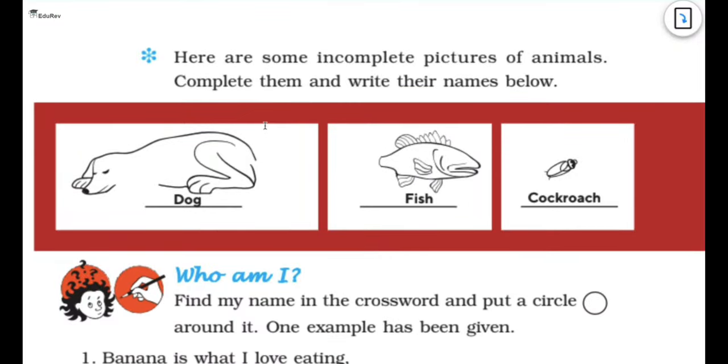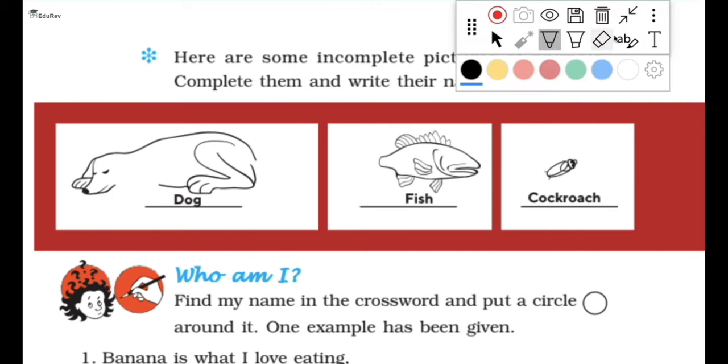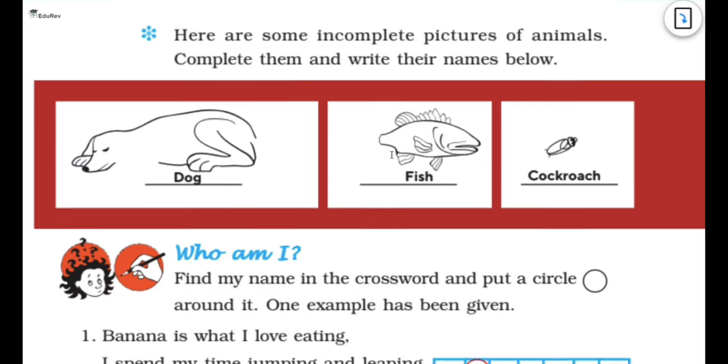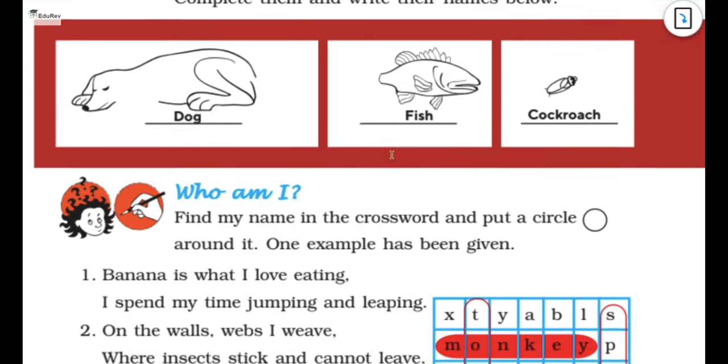The next is that here are some incomplete picture of animals. And you have to complete them and write their names below. So we have dog, we have fish, and we have a cockroach as well. So what you need to do is you have to make these. My drawing is so poor. So what you can do is you have to draw all these.